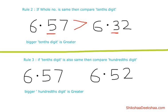Now if the tenths digit is also the same, then we should compare the hundredths digit. Like in this example, the whole number is the same — 6 and 6 — then the tenths digit, 5 and 5, is also the same. So the next digit to compare is the hundredths digit.